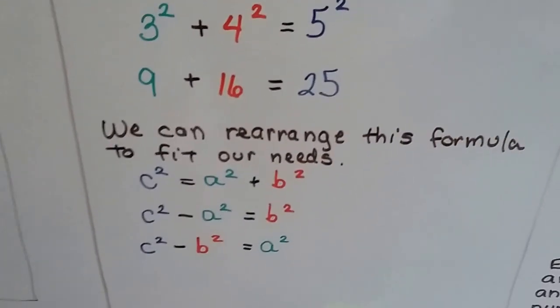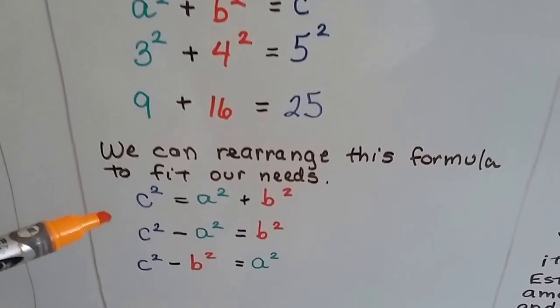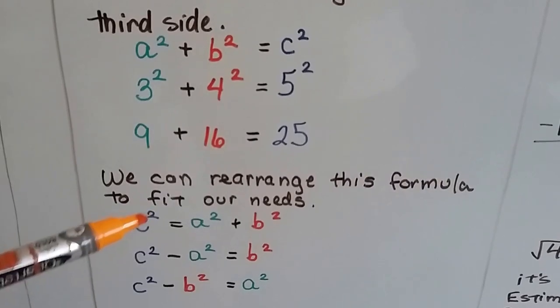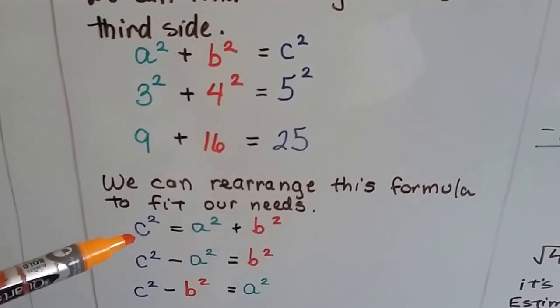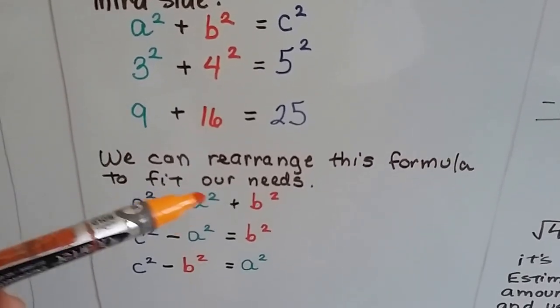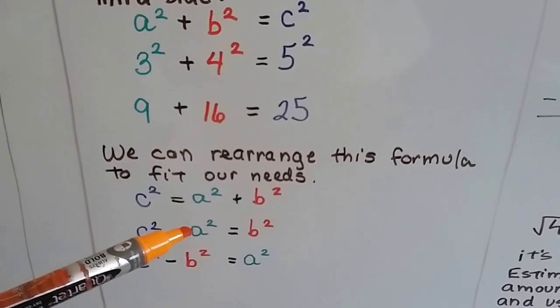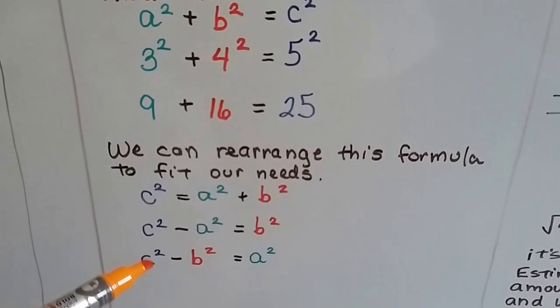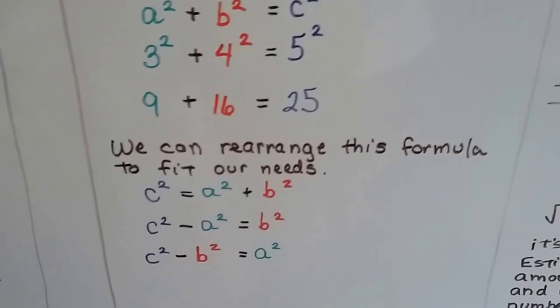We can rearrange this formula to fit our needs. So if we know what the hypotenuse is, and we know what c squared is, we can go the other way. And we can take away the a squared to figure out what the leg b is. Or we could take away b to find out what the leg a is.